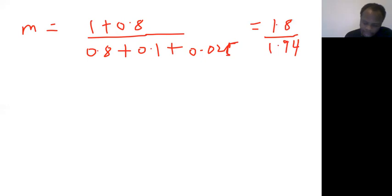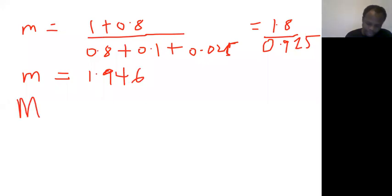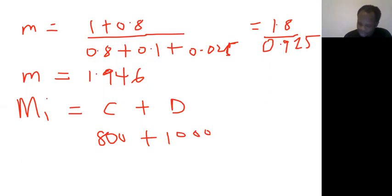So the money multiplier is 1.946. The next one is money supply, which is also the same as M1, equals currency plus checkable deposit. In the question, our currency was given as 800 and our checkable deposit was also given as 1000, so that gives us 1800 dollars.